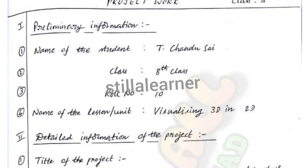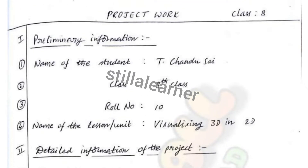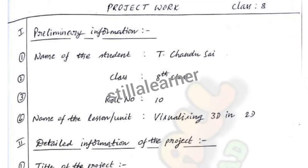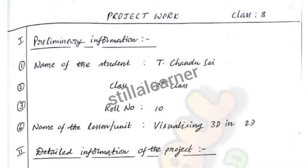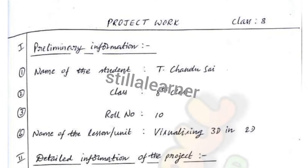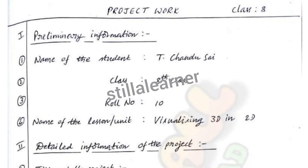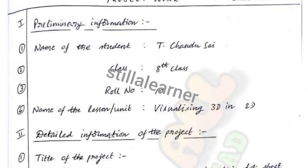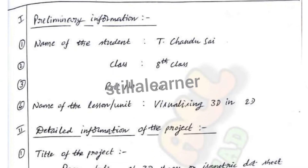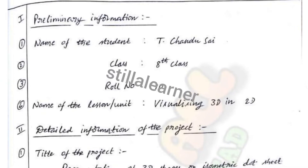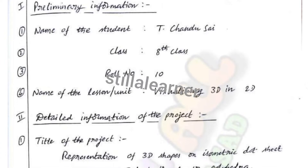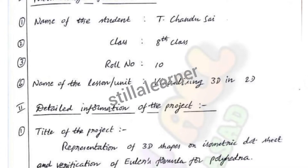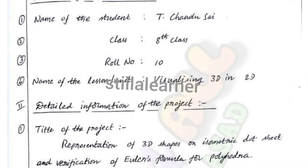Hey guys, welcome back again. In this class we are going to see this FA4 project work of Maths Class 8. First of all, you have to write down the preliminary information. In the first section you have to write down your name, then your class, then roll number.